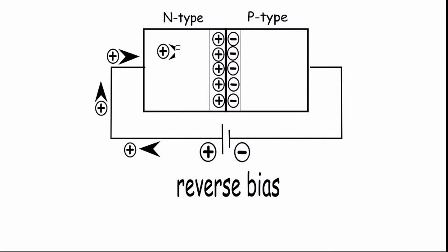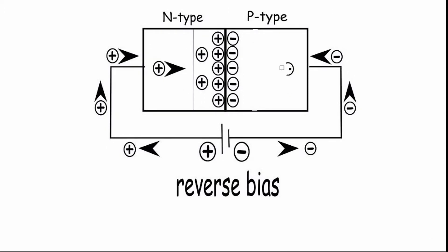When the diode is reverse biased, the holes from the P-side will get attracted towards the negative terminal of the supply, and electrons from the N-side are attracted towards the positive terminal. Hence, the depletion region increases.